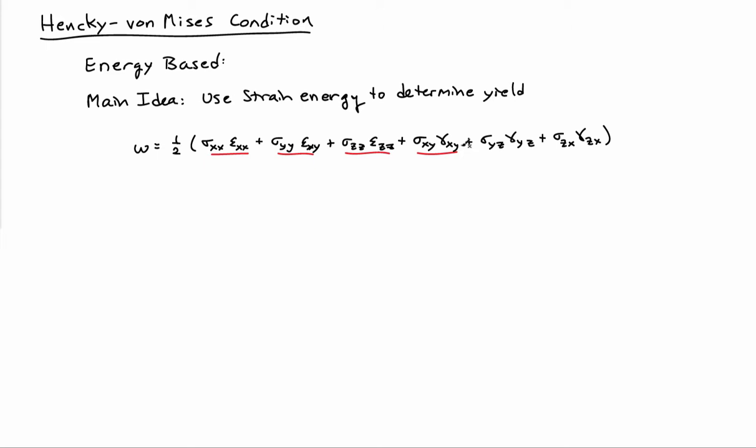And now the thing to remember is this idea that yield in metals is independent of pressure. So what I'd like to do is rewrite this expression here to separate out the pressure contribution from the deviatoric contribution. So remember that we have this relationship that says that the stress is equal to the deviatoric plus the pressure in the system, and so I can use that to kind of separate things out.